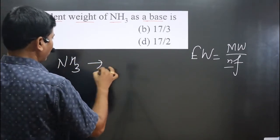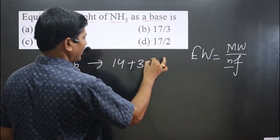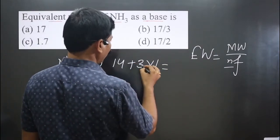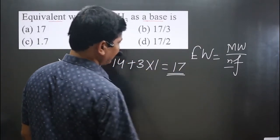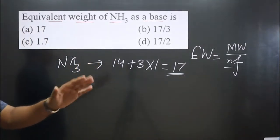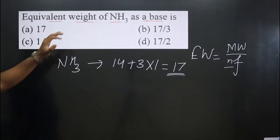NH₃ has nitrogen which is 14, and three hydrogens at 1 each. So 14 + 3 = 17 is the molecular weight, 17 grams per mole.